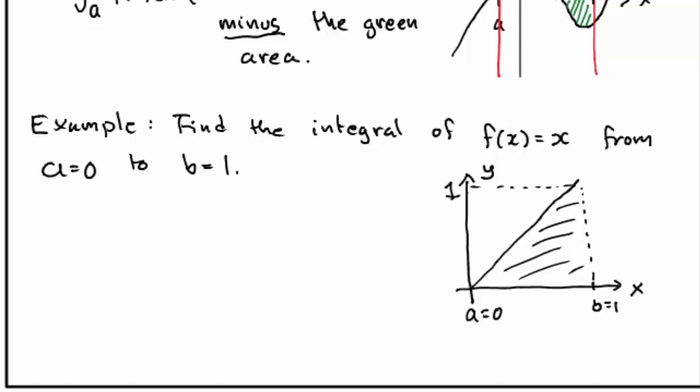Now this is just a triangle with base 1 and side 1, so we know it has an area of 1 half.